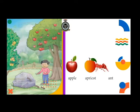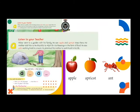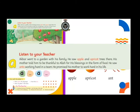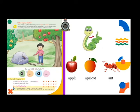This is an ant. Now let us enjoy the story. Akbar went to a garden with his family. He saw apple and apricot trees there. His mother told him to be thankful to Allah for his blessings in the form of food. He saw ants working hard as a team. He promised his mother to work hard in his life.